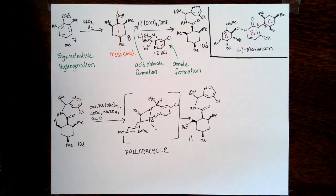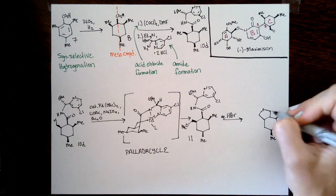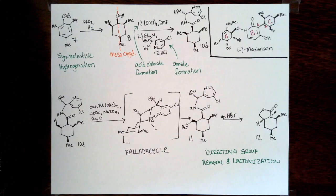Tying together what Grace and Wes have just said, one, directing groups can be extremely important for these types of C-H functionalization reactions. C-H functionalization is really hard. One important facet of this reaction is that ultimately they can just use strong acid to remove it and ultimately undergo this lactonization reaction to give compound 12.